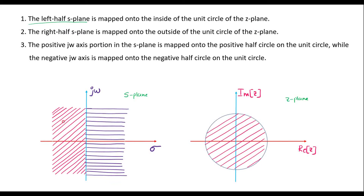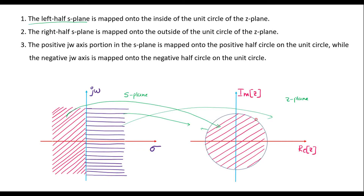It means that the left half of s-plane, which I have shown with pink color lines, is mapped into inside the unit circle. Here I have shown inside the unit circle with the same lines. Similarly, the right half of s-plane is mapped onto the outside of the unit circle of the z-plane. So the poles which lie on the right half of the s-plane, shown with blue color horizontal lines, will be mapped into outside the unit circle — it may be outside this entire unit circle.